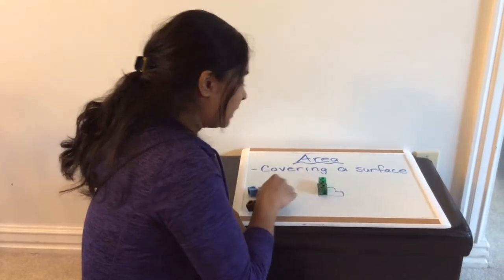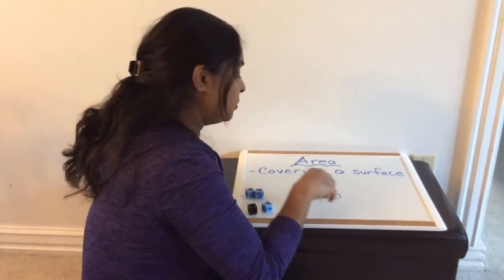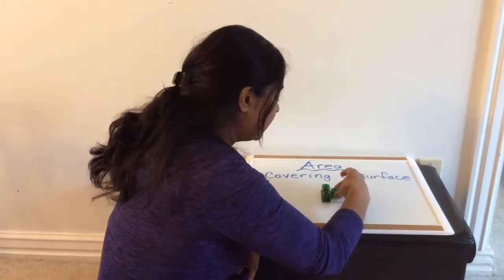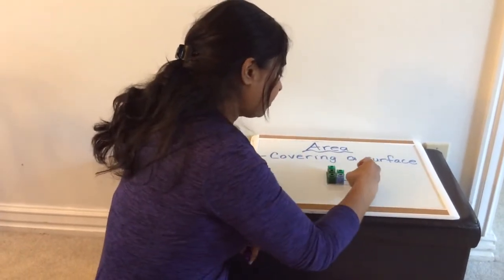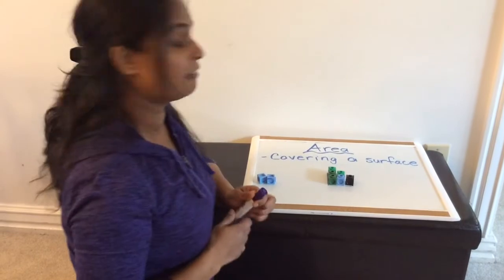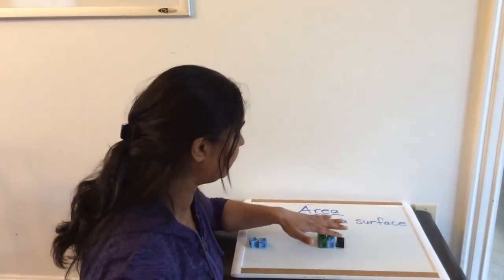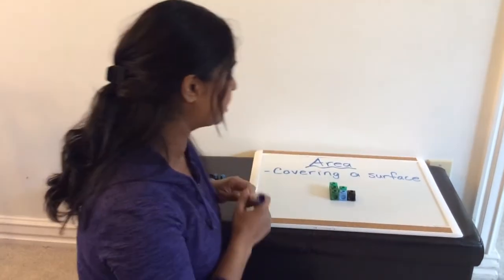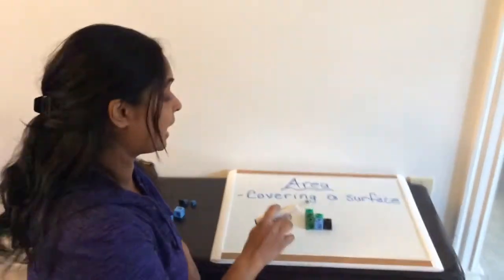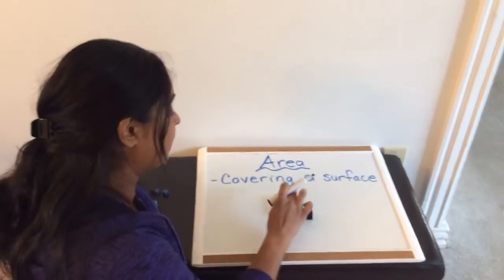So let's have a look here. So far, I've used three linking cubes and I'm going to continue covering my figure. And there we go. My figure is all covered in. Everything's fitting nicely, no spaces and there's no room for any more. So that'll be how much my area is. So then we're going to count to see what the area is.